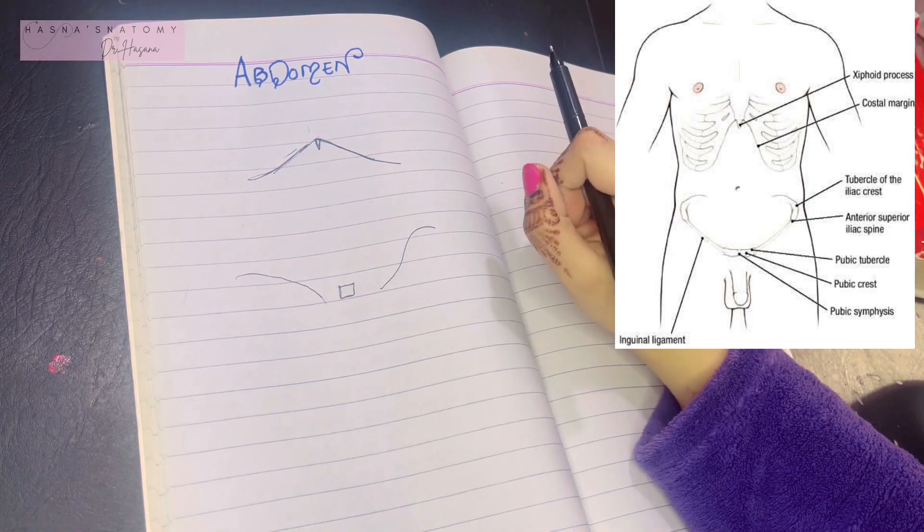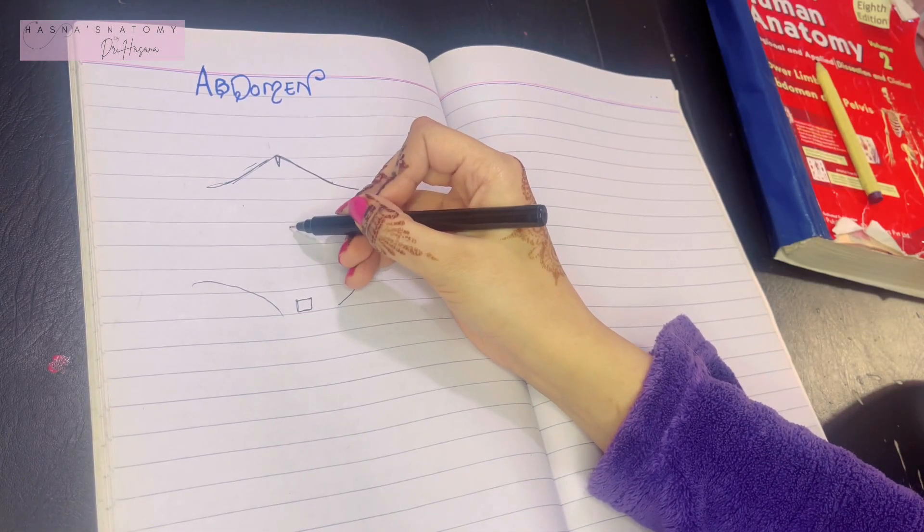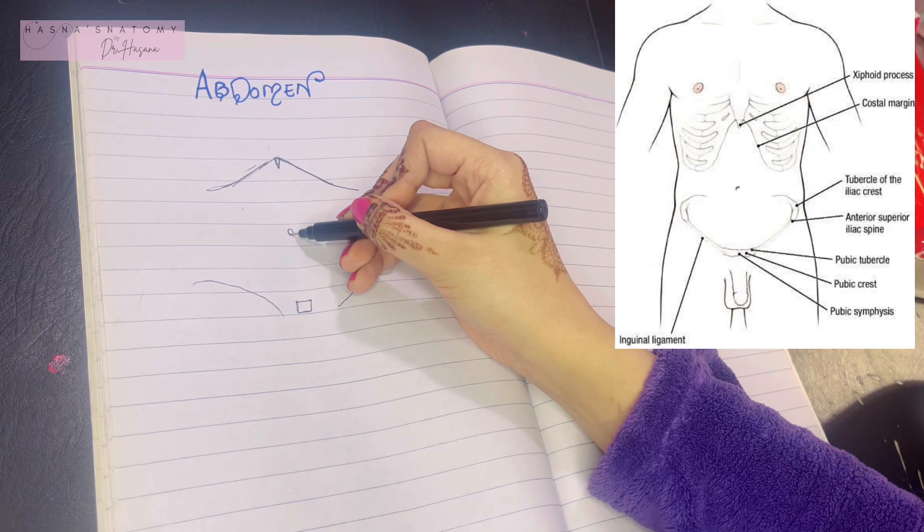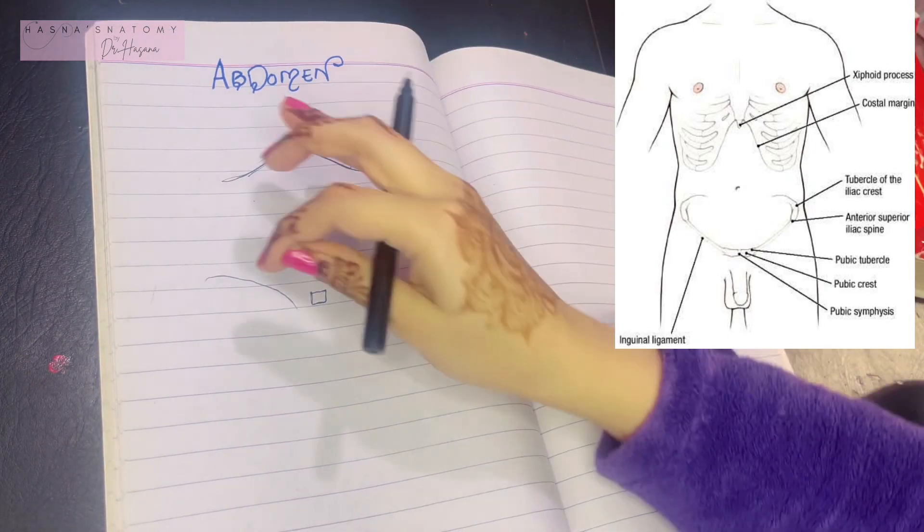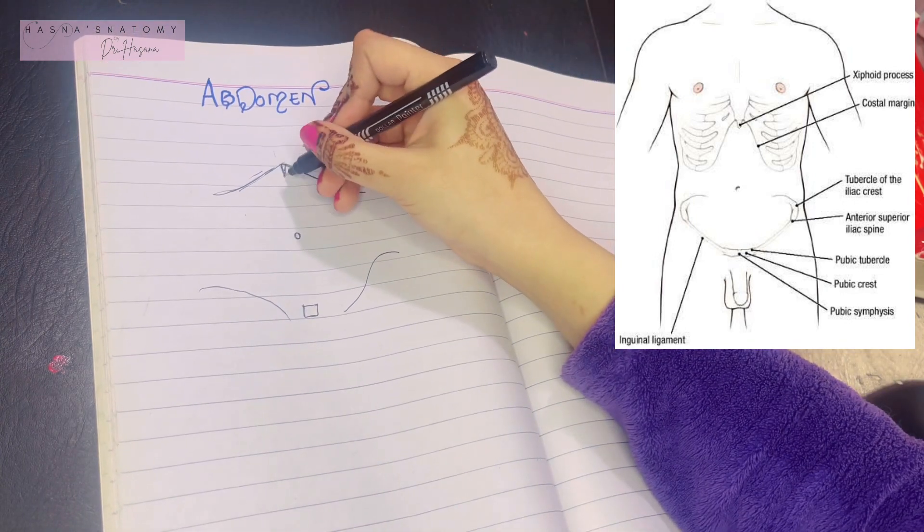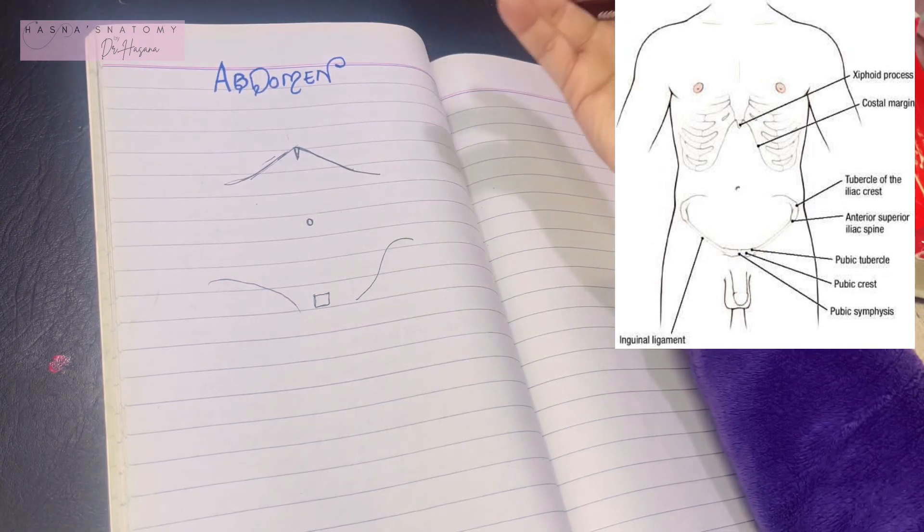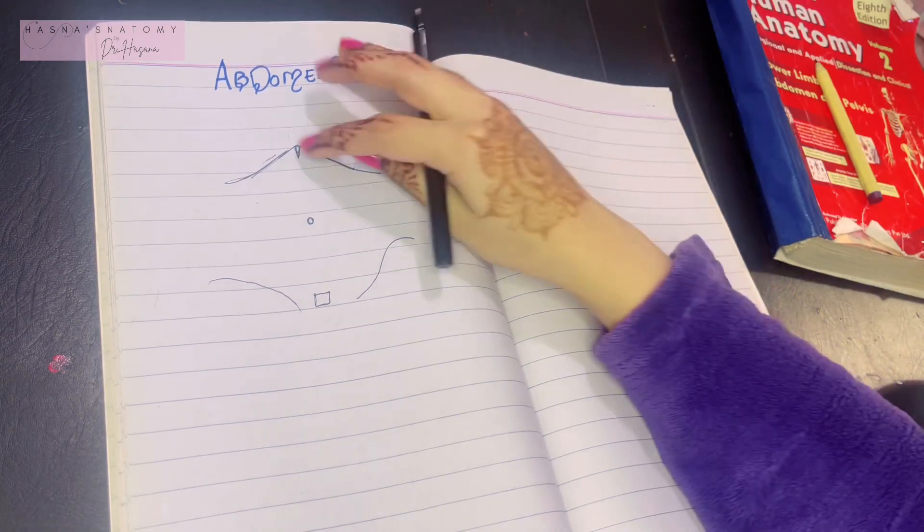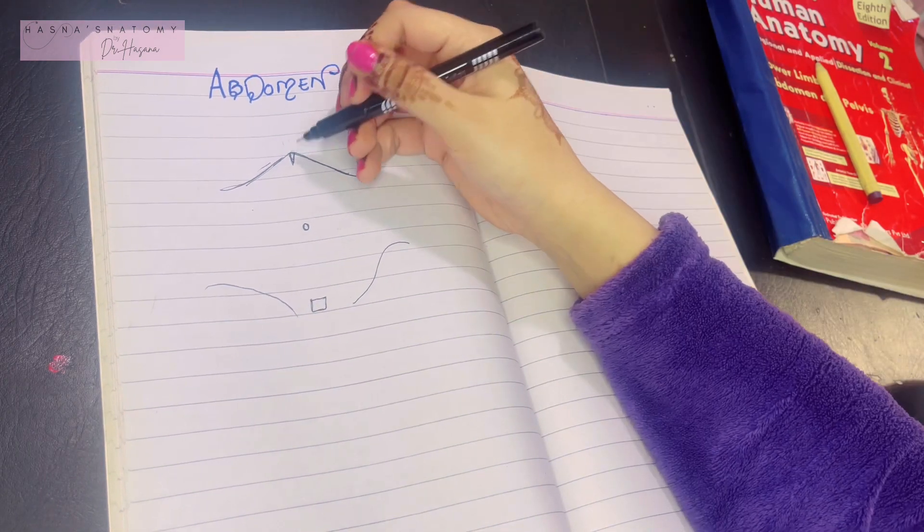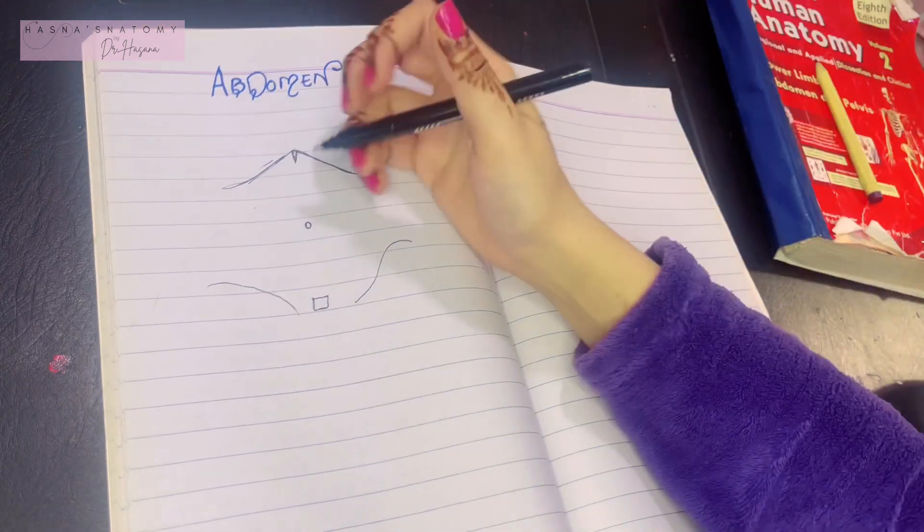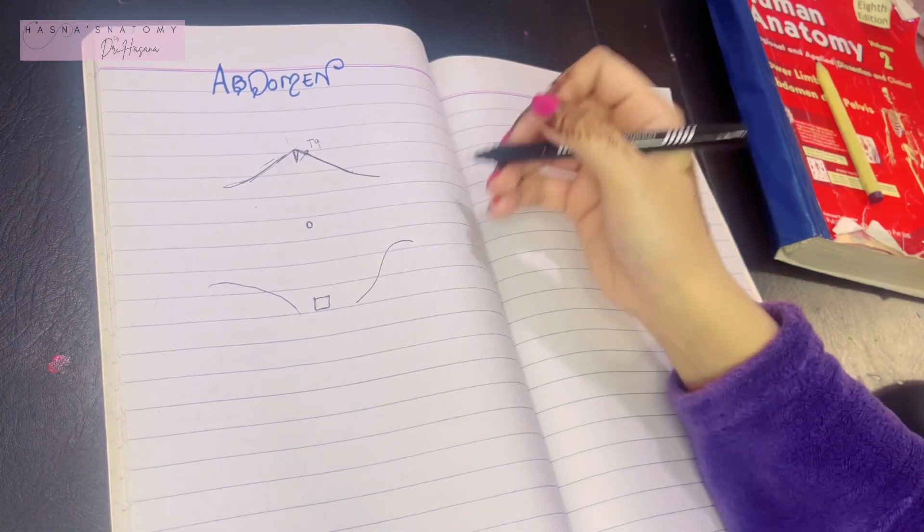We are going to talk about the important landmarks of the abdomen. Beginning first, we have the umbilicus—you all know what that is, it's the belly button in layman terms. Now, how can we decipher the location of the various landmarks of the abdomen? That's easy—we have a whole vertebra running on the back, so why not locate everything in relation to the number of the vertebra? The xiphoid process is located on the T9 vertebra. The umbilicus is located at the junction of L3 and L4.